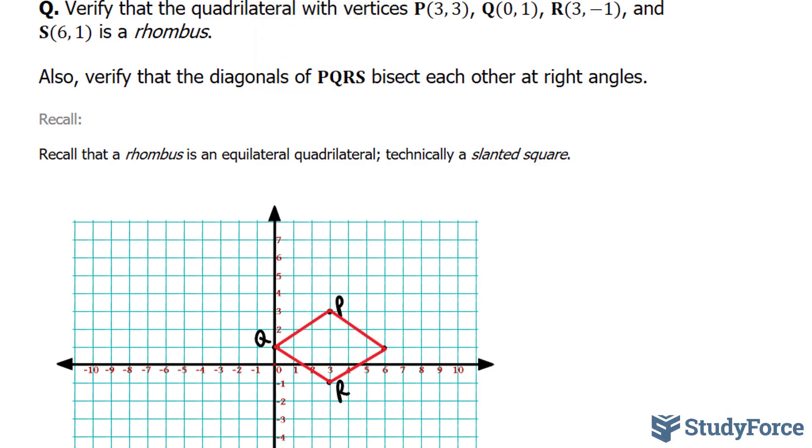Now, to determine that this is in fact a rhombus, all four sides should be equal length. So with that said, let's go ahead and find the lengths between Q and P, R and S, Q and R, and P and S. Instead of going through all of these, I'll show you how to find, for example, Q and R, and then the same method can be used for the other three.